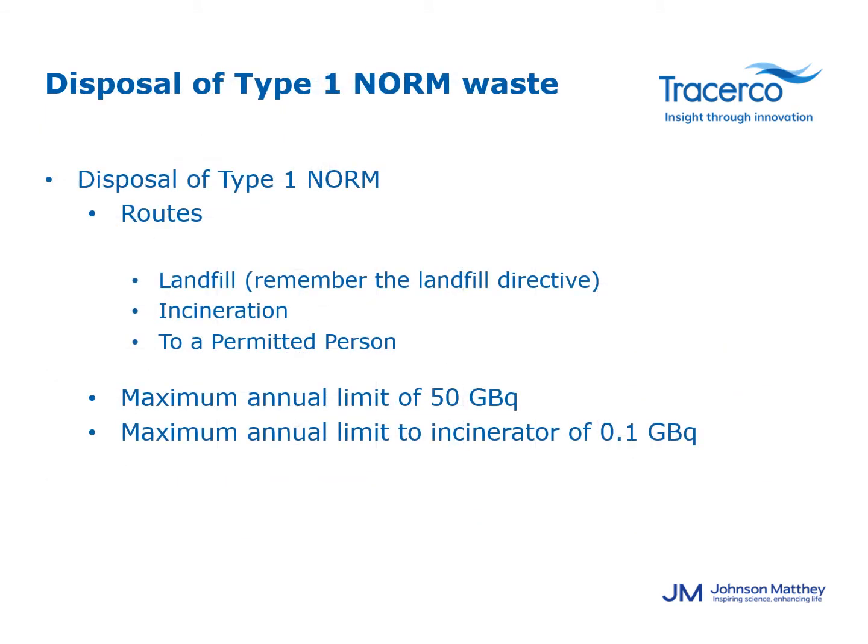The disposal options for type 1 NORM waste are listed in this slide. In terms of disposal routes, the waste may go to a normal landfill site provided there aren't any other hazardous materials within the waste. The waste may go to a normal incinerator which is used to incinerate normal household waste. Or it may go to a permitted person — a site which holds a permit allowing disposal of radioactive waste. The exemption is conditional, meaning that the maximum annual limit which can be disposed of via landfill is 50 GBq, and for incineration that maximum limit is significantly lower at 0.1 GBq or 100 MBq per year.